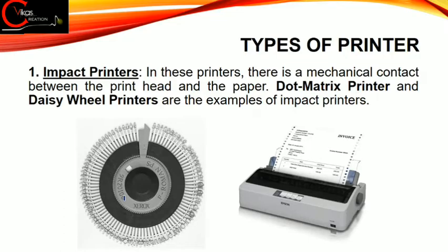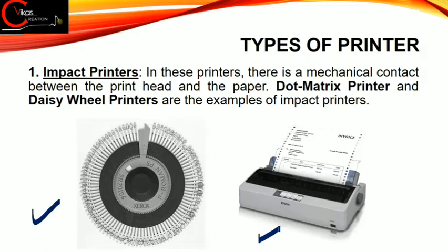In impact printers there is a mechanical contact between the print head and the paper. The most commonly used examples are dot matrix and daisy wheel printers. You might have seen or heard about typewriters — in a typewriter there is mechanical contact between the print head and the paper, so a typewriter is a type of daisy wheel printer. In dot matrix printers, everything is printed with the help of tiny dots — for example, electricity bills are generally printed using a dot matrix printer. The biggest problem with these two categories is that they can only print words or sentences and cannot print graphics or media.